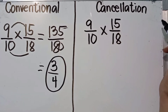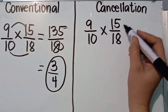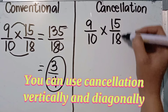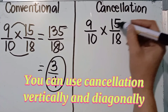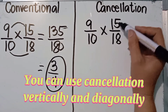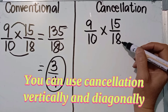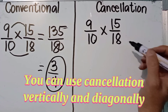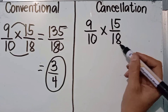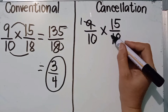Using the cancellation method for nine over ten times fifteen over eighteen, we look for common factors checking vertically or diagonally. Nine and eighteen have a common factor of nine: nine divided by nine is one, and eighteen divided by nine is two.